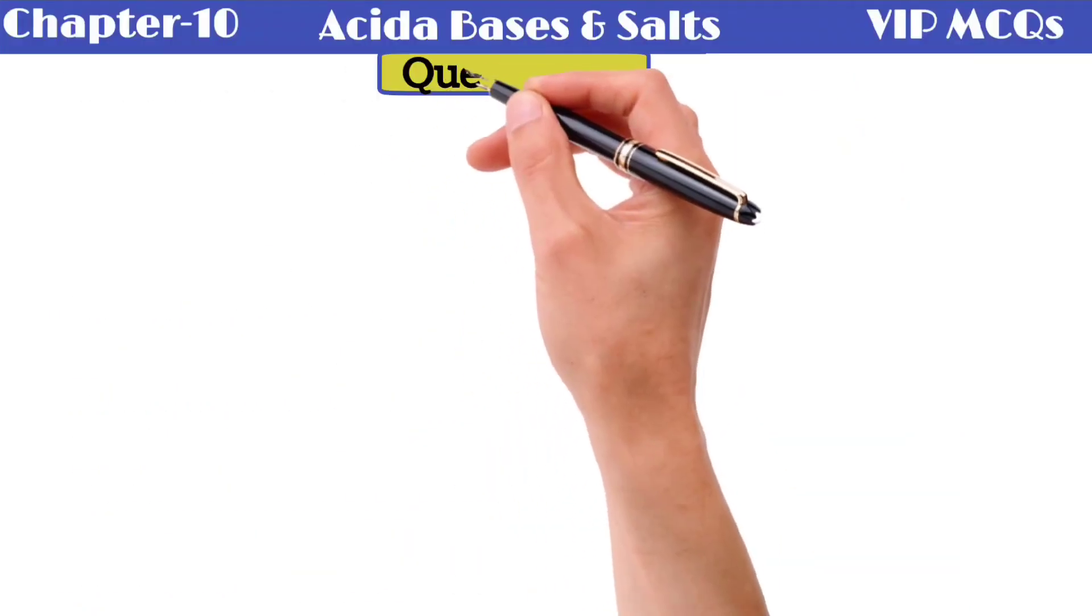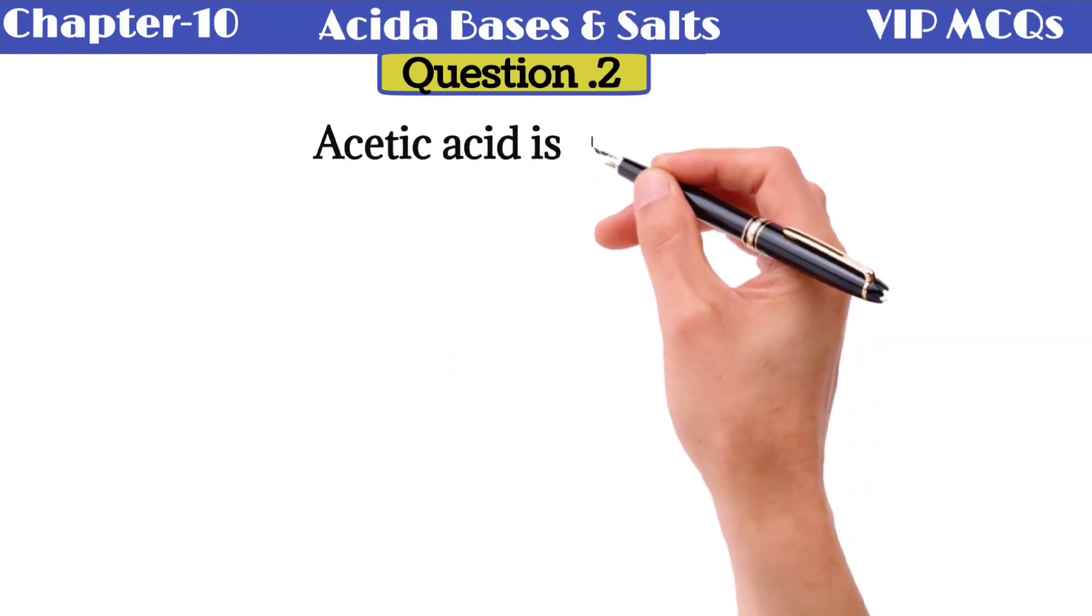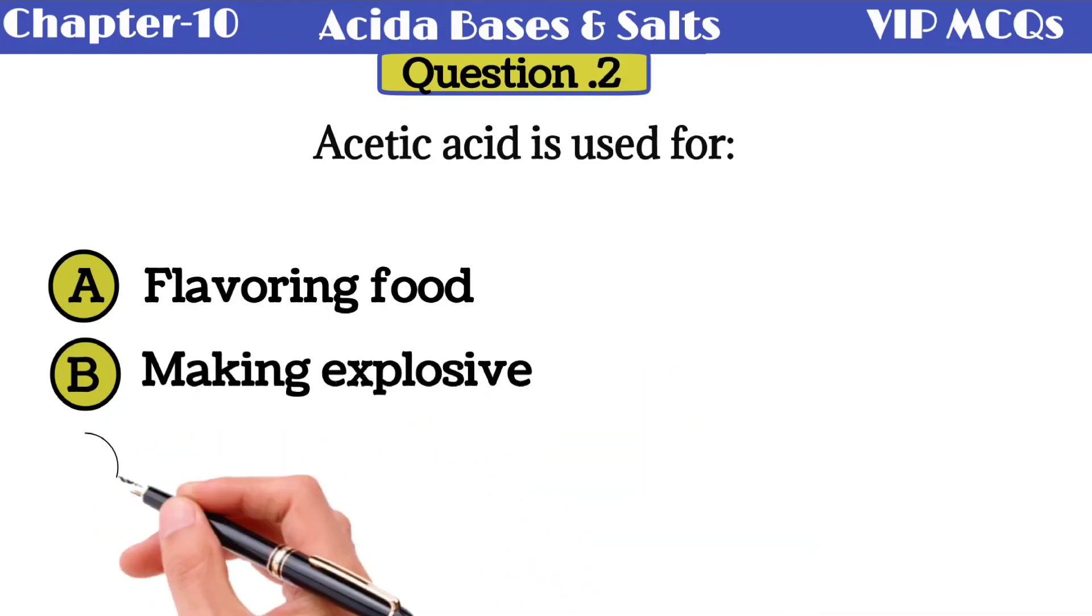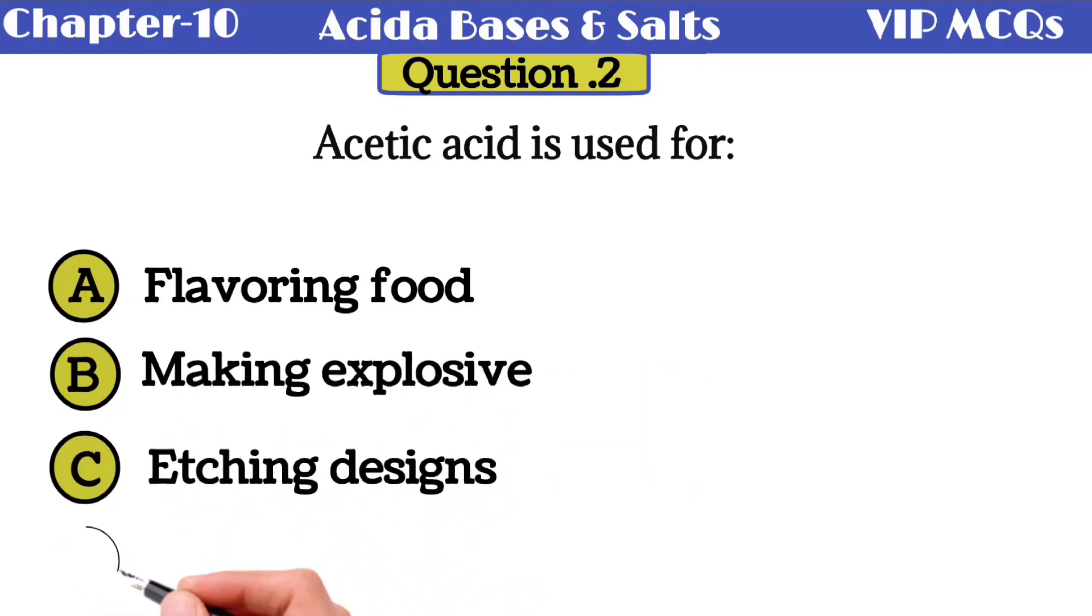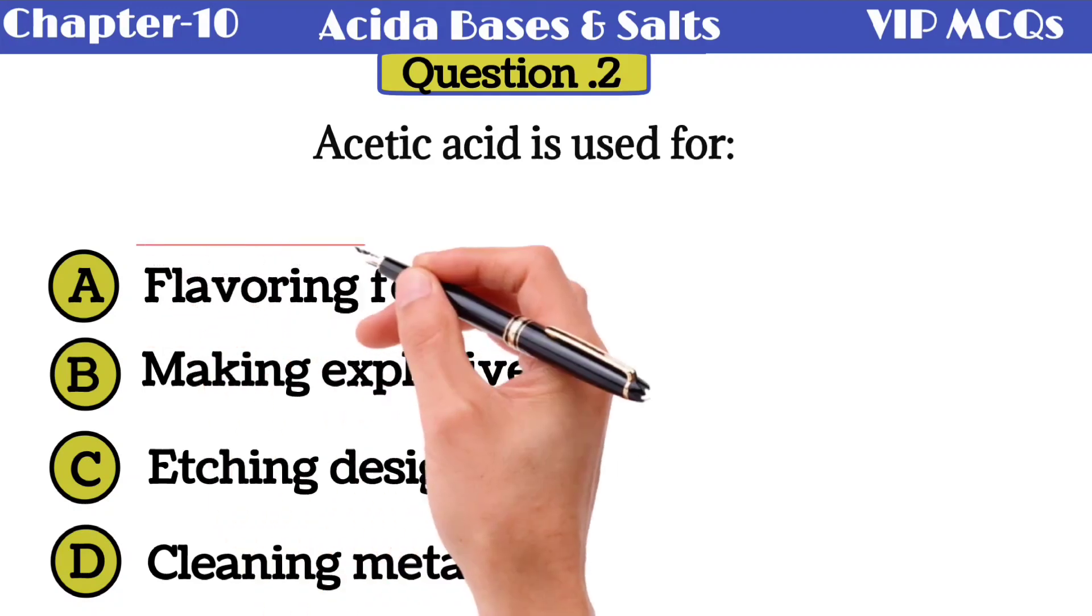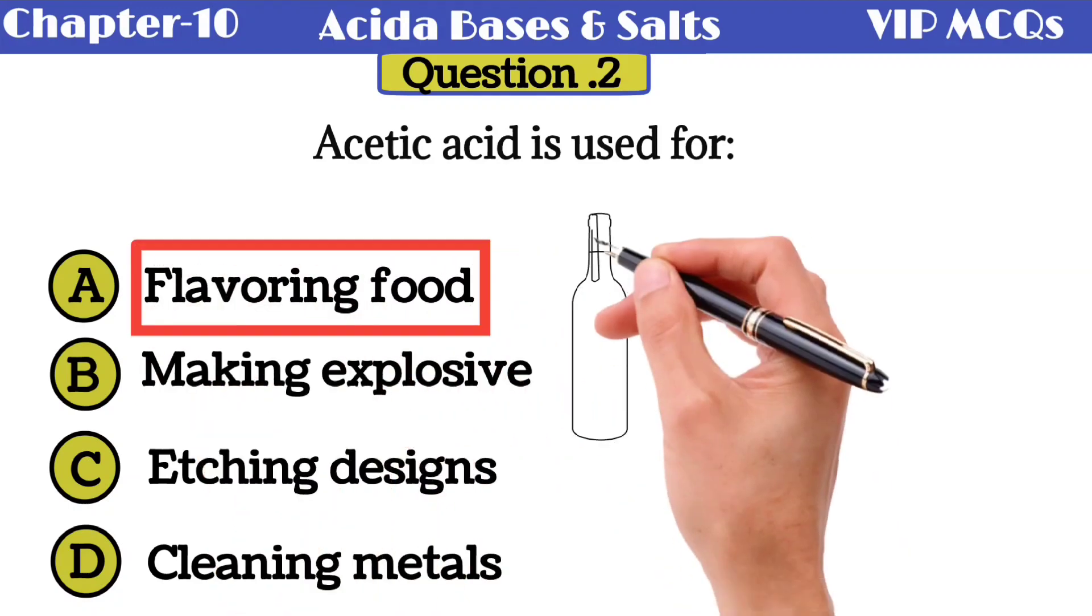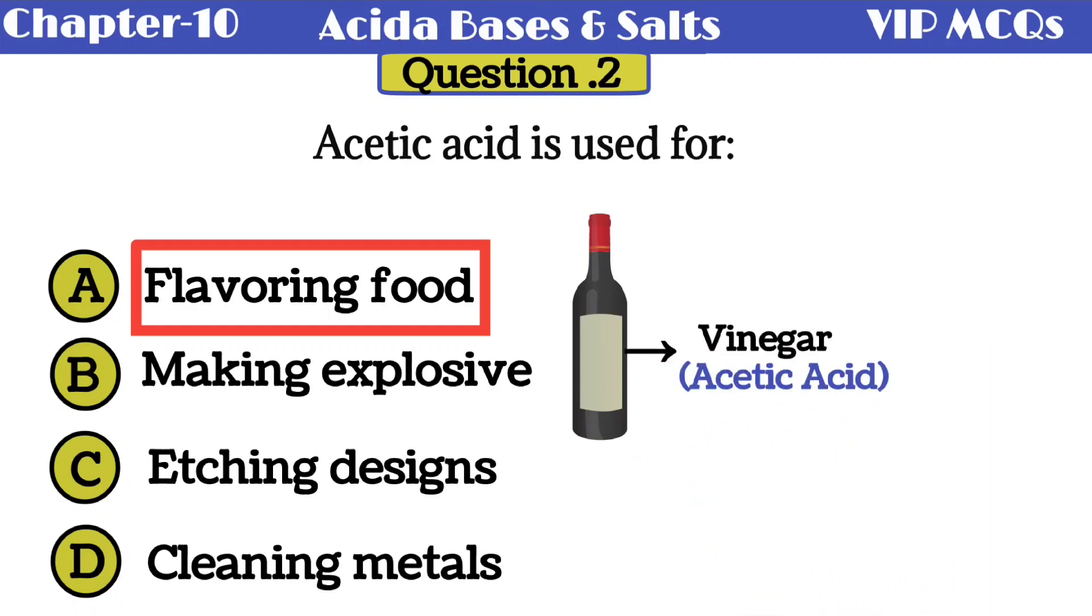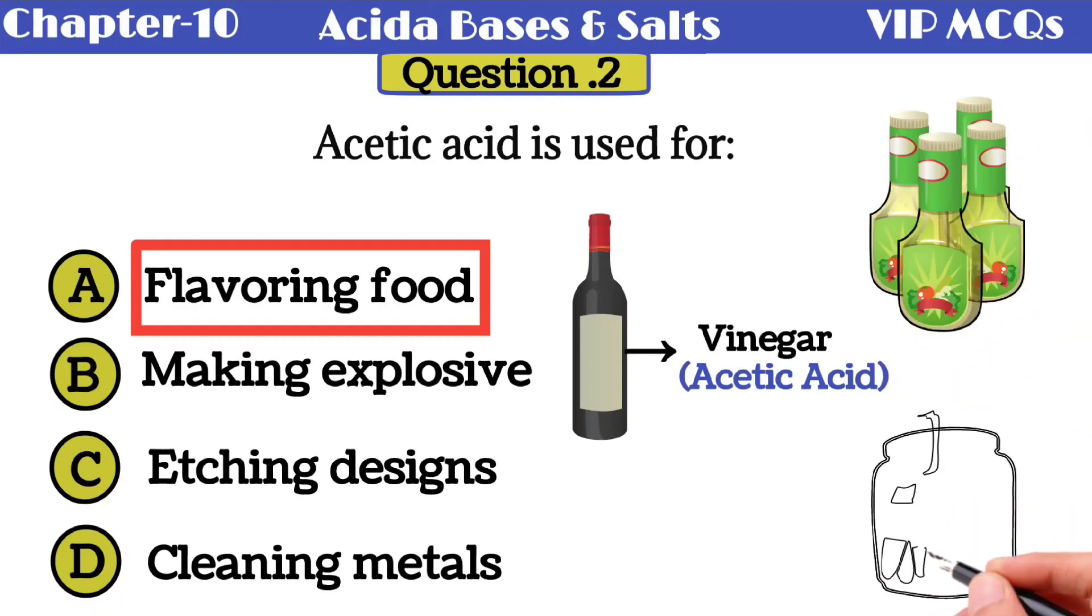Question number 2: acetic acid is used for - option A flavoring food, option B making explosives, option C etching designs, and option D cleaning metals. The correct option is flavoring food. Acetic acid is the primary component of vinegar, which is used to flavor various dishes. It is commonly used in salad dressings, sauces, pickling, and as a general seasoning in cooking.